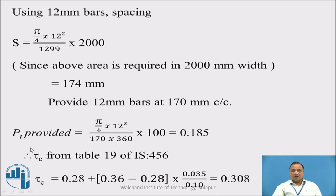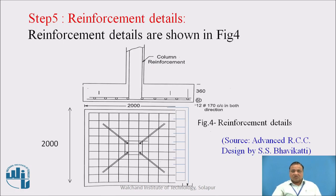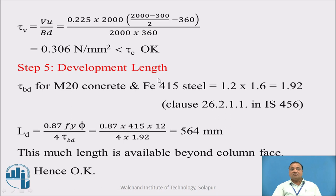Since it is a two-way slab, the percentage of steel provided works out to be 0.185%, giving tau C of 0.308 N/mm² from IS456. Tau V (VU/BD) works out to be 0.306 N/mm², which is less than tau C. Therefore, the reinforcement is adequate. For development length, with M20 concrete and Fe415 steel, tau BD is 1.2 × 1.6 = 1.92. LD provided is 564 mm. This length is available beyond the face of the column, hence it is okay.